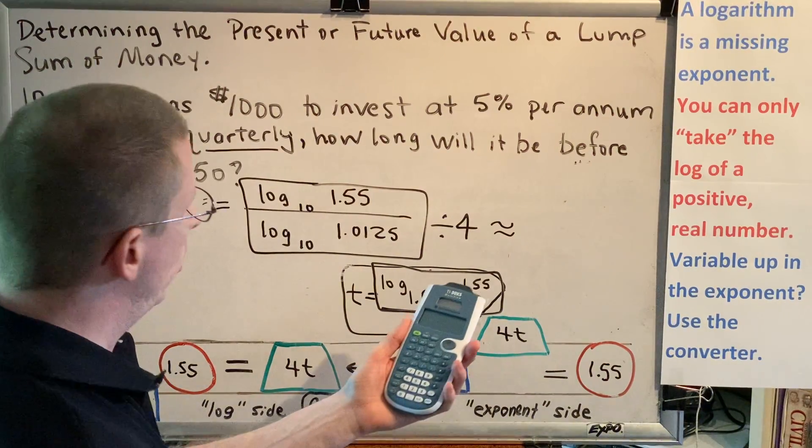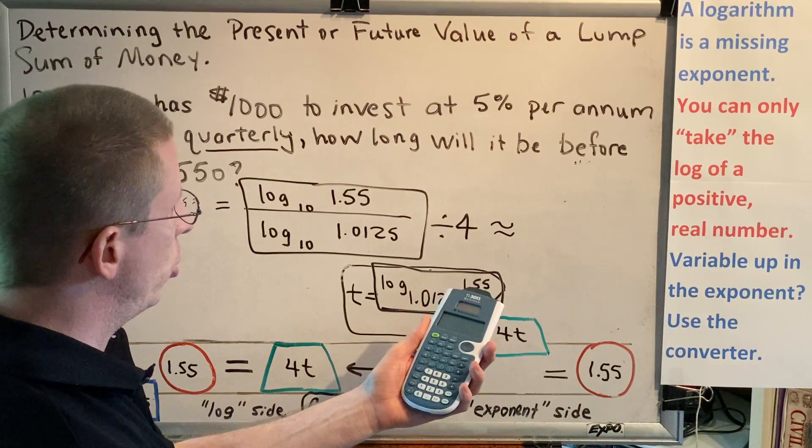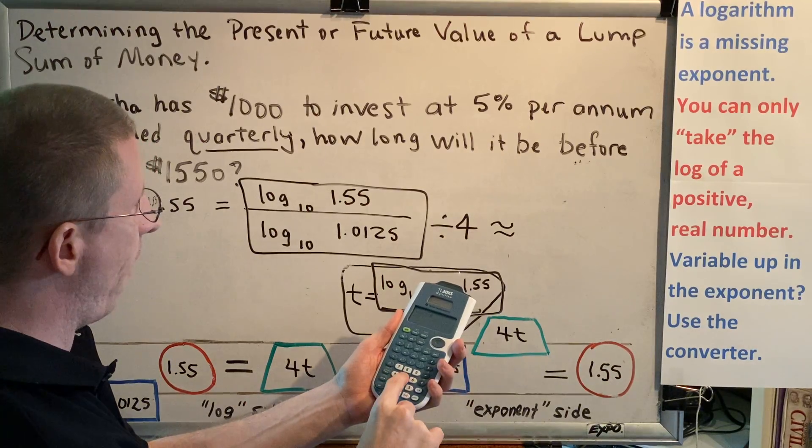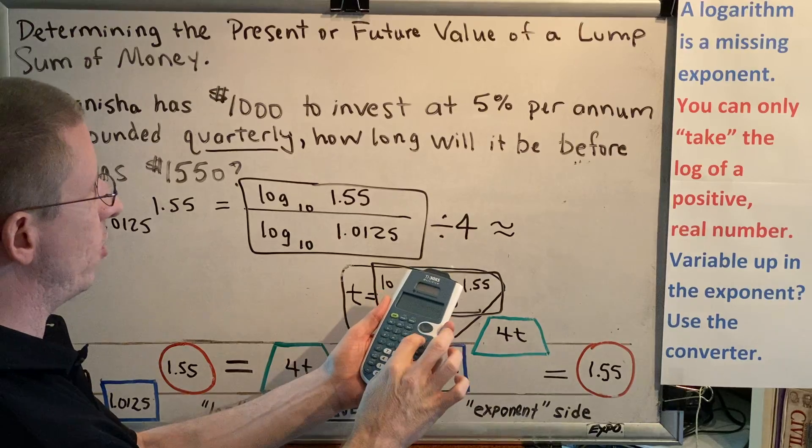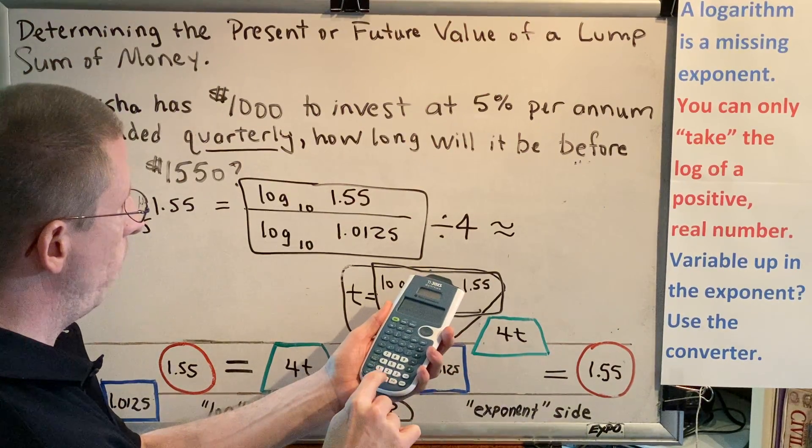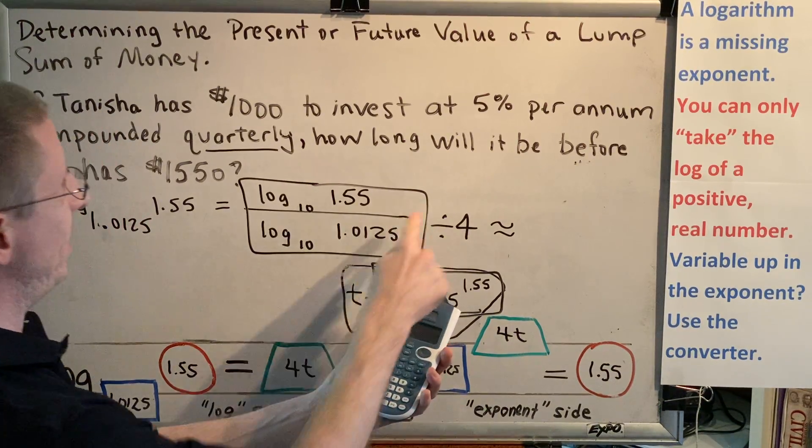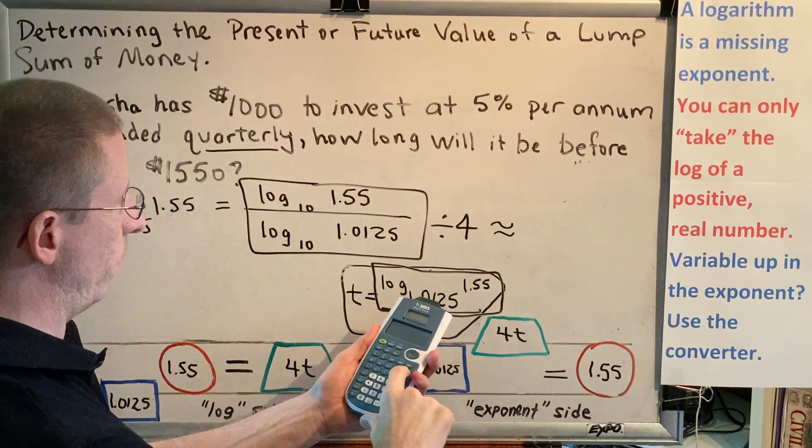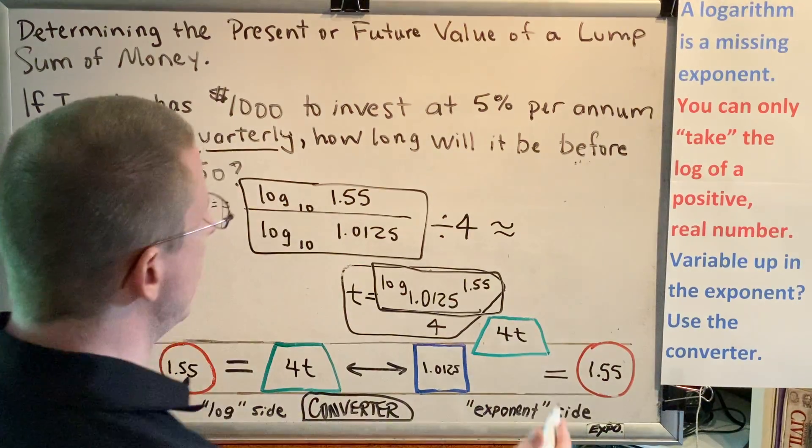Let's proceed. So log base 10 is just the log button. So what I'm going to do here is I'm going to take log and then 1.55 close parentheses enter. The next thing I'm going to do is to divide by log 1.0125 close parentheses enter. That's this box. Now I'll divide that result by 4. Divide by 4, enter. And I get the value 8.82.